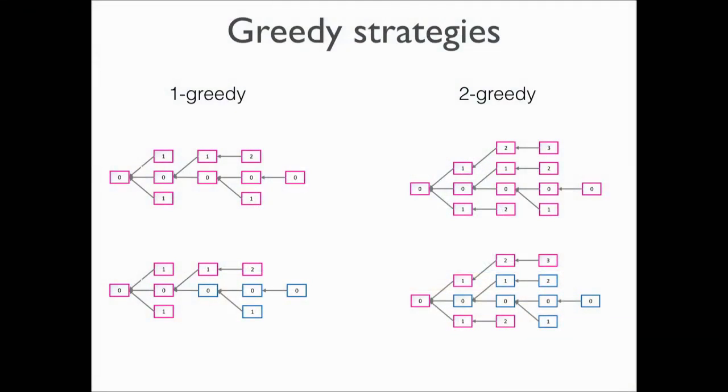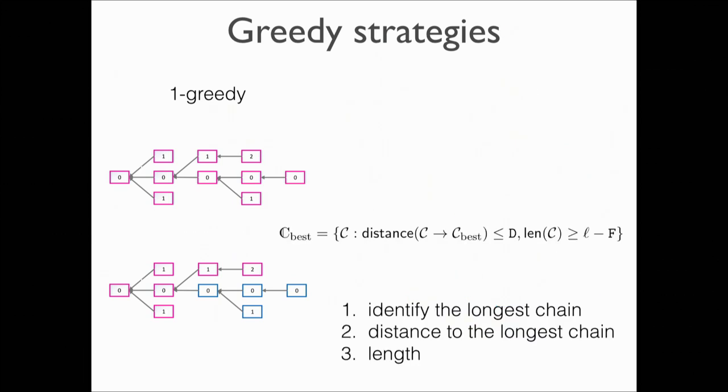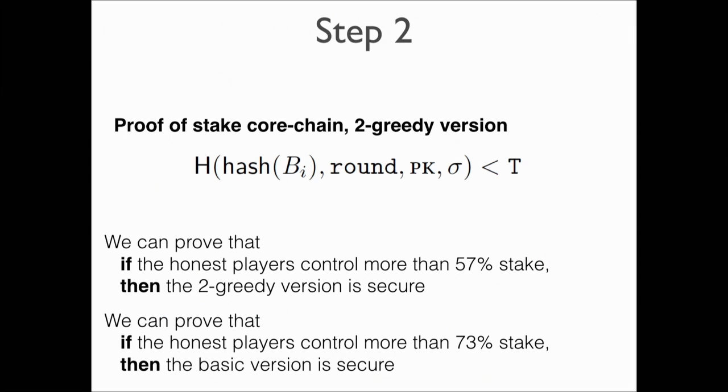The intuition is we extend blocks which are very close to the longest chain, which is very useful for security. If this is not carefully defined, the adversary may play some strategy to generate a long fork. With this nice structure, long forks will never be generated — blocks will always be generated close to the main chain. Similarly, two-greedy means the distance to the longest chain is two. We also consider the length, so the longest chain, second longest, third longest, and so on.